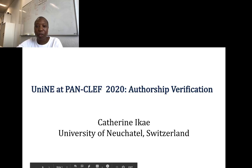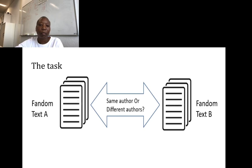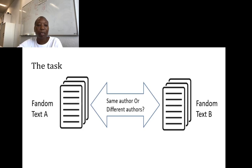Author verification is a computational process of detecting who wrote a given text. The task at hand is to determine if two pairs of text were written by the same author or different authors. The two pairs of text are written by known authors about known topics — the authors write mainly about novels, movies, or TV series. By comparing the writing styles of the text, we arrive at a decision as to whether the authors are the same or different.